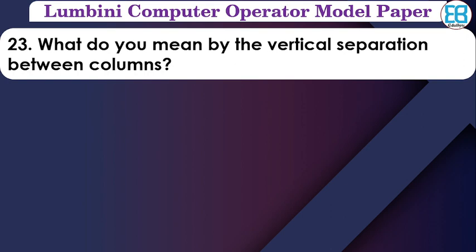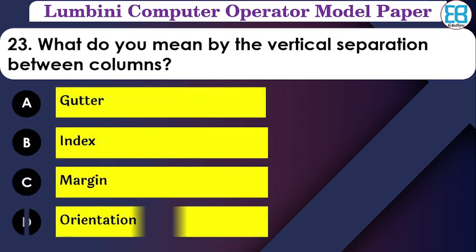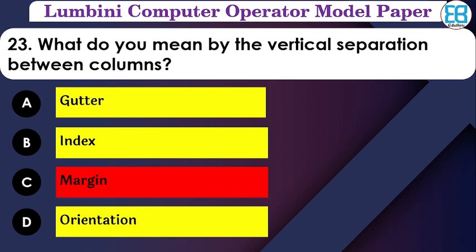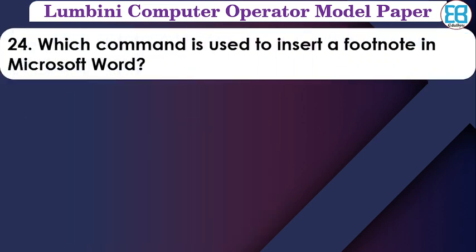What do you mean by vertical separation between columns? The options are: gutter, index, margin, orientation. The correct option is margin — the vertical separation between columns is called the margin.